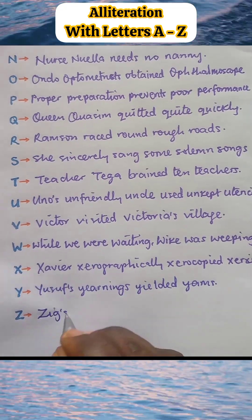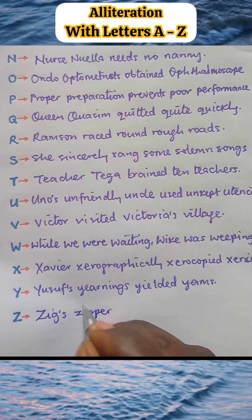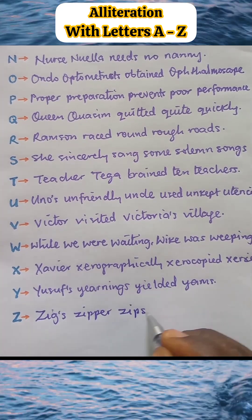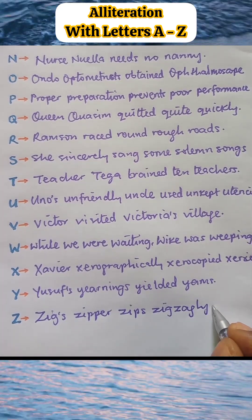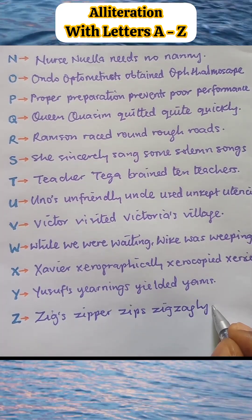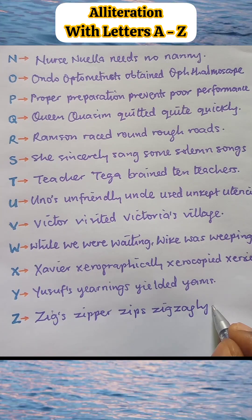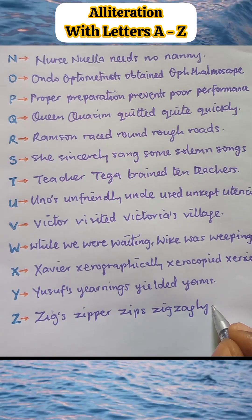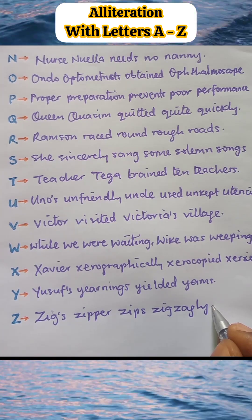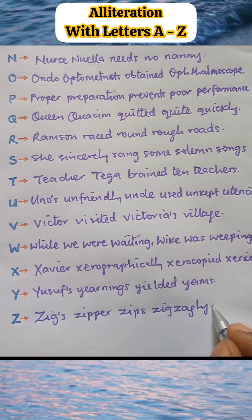Alliteration Z: Zig's zipper zips zigzagly. Thanks for watching. Which of the alphabet interests you most? Let me know in the comment section. Thank you.